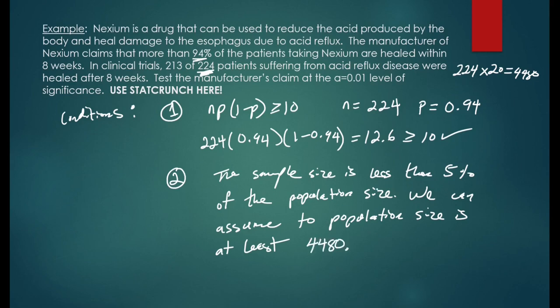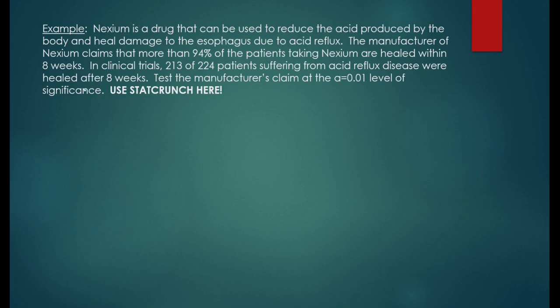Condition 2 gives us the independence assumption. We're assuming the sample comes from a population that's independent from one another. Since all the conditions are met, we'll start the claim.